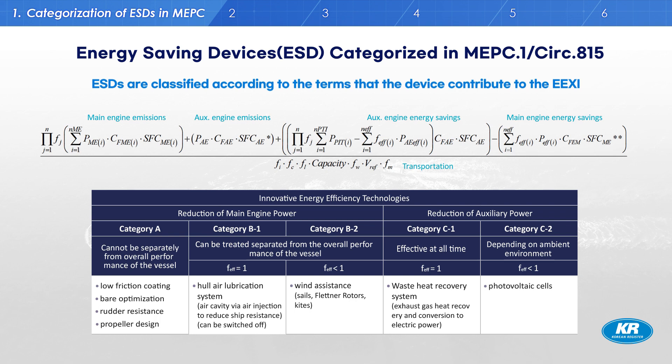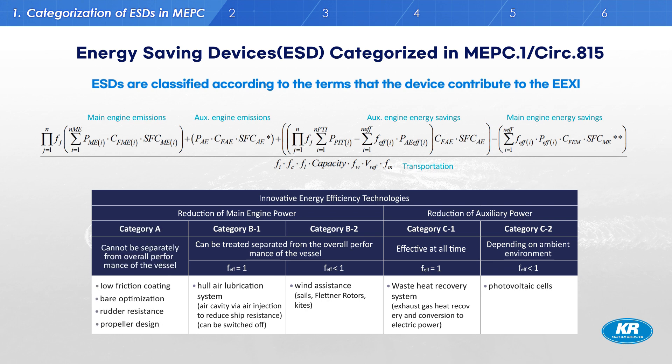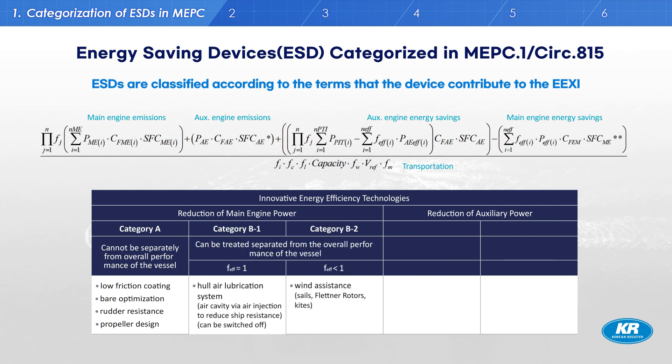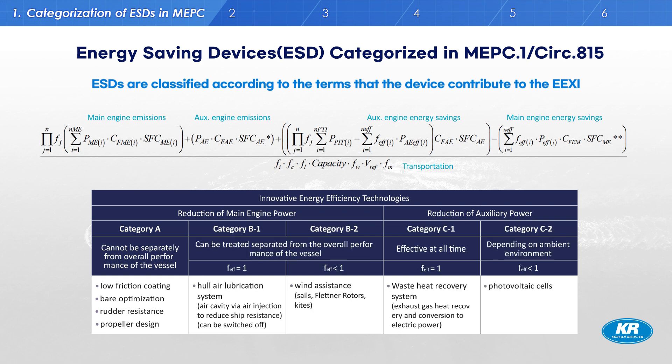For example, devices that can increase reference velocity are in Category A, devices that can improve main engine energy efficiency are in Category B, and devices that can improve auxiliary engine energy savings are in Category C. In addition, the categories are subdivided into Category B1, B2, or Category C1, C2, according to the ESD's weather dependency.